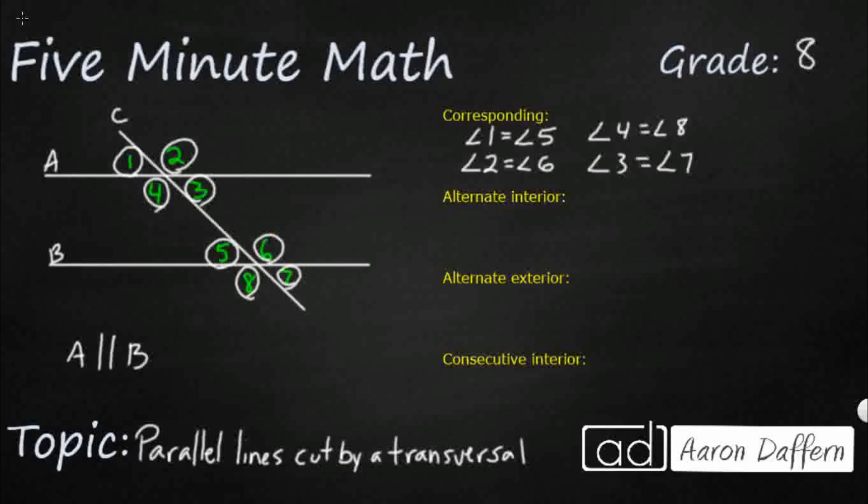Now we have alternate interior angles. So alternate is going to help us know that we're going on either side of the diagonal, the transversal. Interior means we're on the inside of those parallel lines. And so take a look at angle 3 and 5 right here. If you look at both of those, you'll see they're both acute angles. And actually, angle 3 is actually equal to angle 5. And we can also say that angle 4 is equal to angle 6.